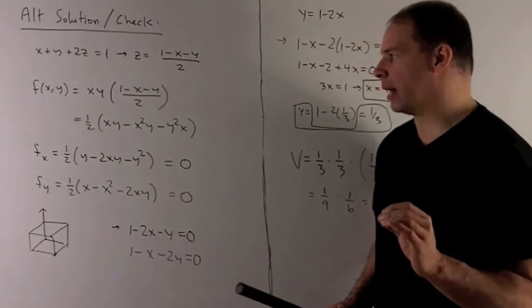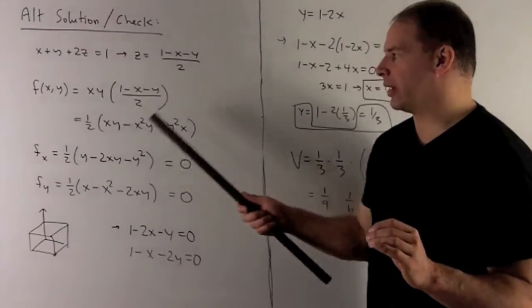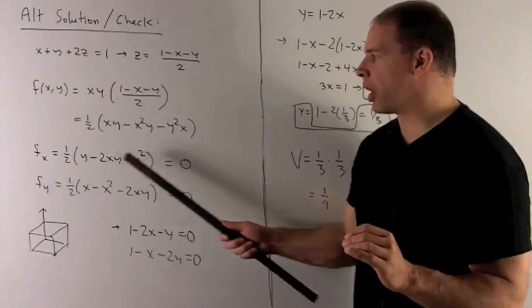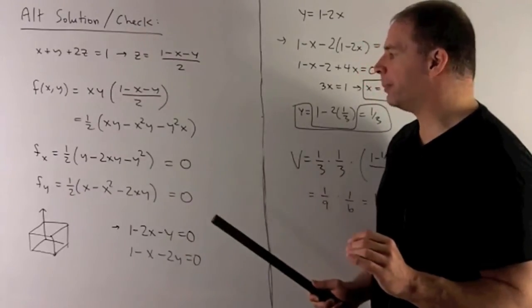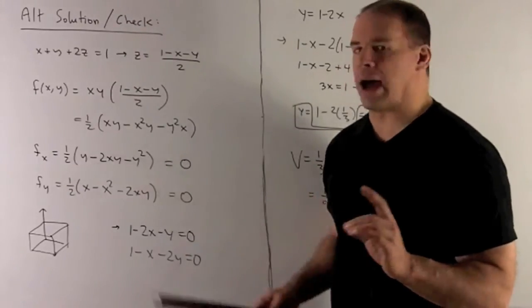So in this case, what do we wind up with? Well, we expand all this out, take our partials, set them equal to 0. What do you know? Here, I can divide by y.